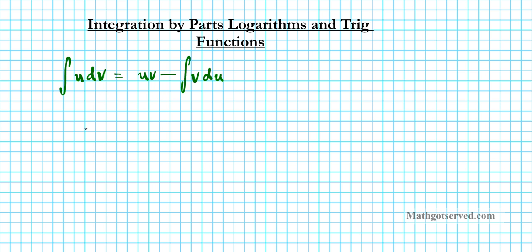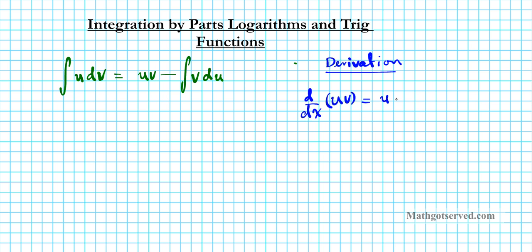You remember what the product rule is? Let's write out the derivation. The product rule finds the derivative of the product of two functions. We have d/dx of uv. Using the product rule, the derivative of uv is u times dv/dx plus v times du/dx.